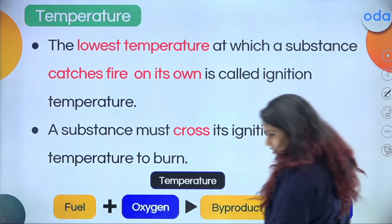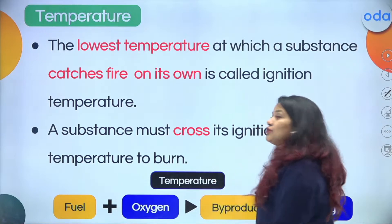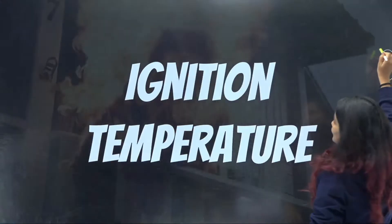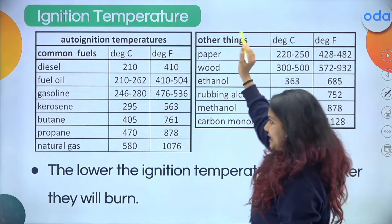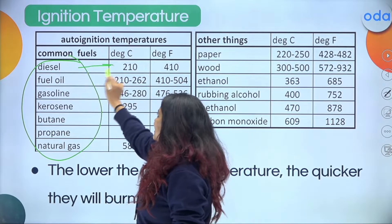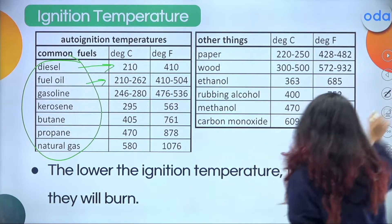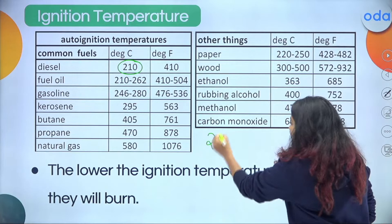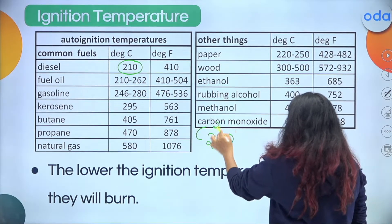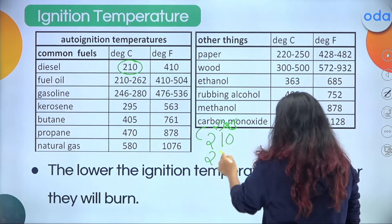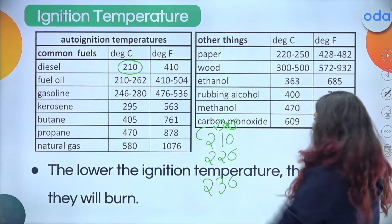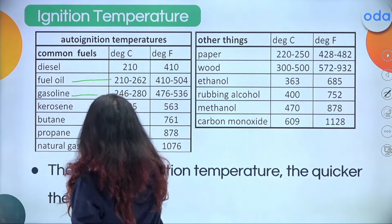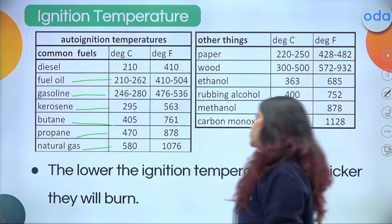In simple terms, ignition temperature is the temperature at which a substance starts burning. For the exam definition: the lowest temperature at which a substance catches fire on its own. Looking at a table of fuels and their ignition temperatures: diesel starts burning at 210°C — it won't burn at 205°C but can burn at 220°C or higher. Similarly, fuel oil, gasoline, kerosene, butane, propane, and natural gas all have their respective ignition temperatures.